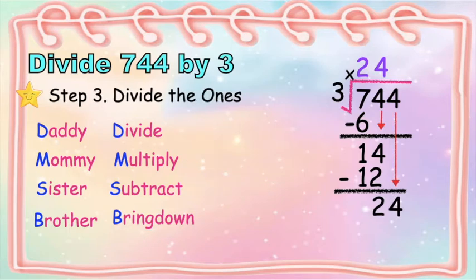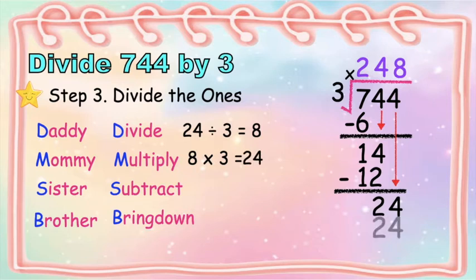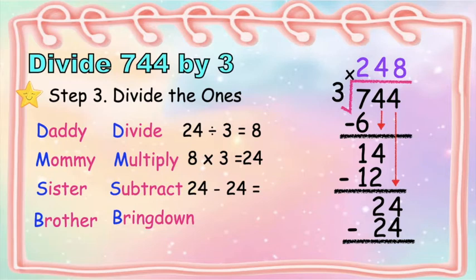Now let's go back to divide. Let's have step 3: divide the 1s. 24 divided by 3 — let's skip count by 3: 3, 6, 9, 12, 15, 18, 21, 24 — so that is 8. Write 8 at the top of 4 at the 1s place. Then multiply: 8 times 3 is equal to 24. Write 24 at the bottom. Then subtract: 24 minus 24 is equal to 0. Since we don't have a digit to bring down, the quotient is 248. So that's it, children — it's easy, right?